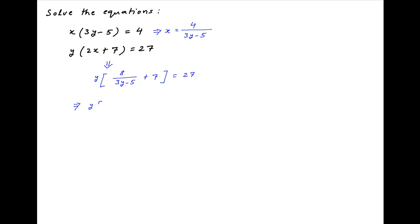This implies that y times in brackets 8 plus 7 times in brackets 3y minus 5 is equal to 27 times in brackets 3y minus 5. Which implies that 8y plus 21y square minus 35y is equal to 81y minus 135. Which implies that 21y square minus 108y plus 135 is equal to 0.